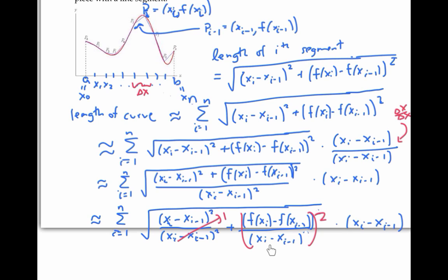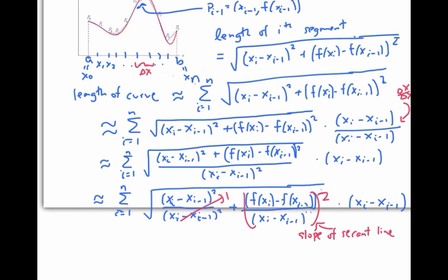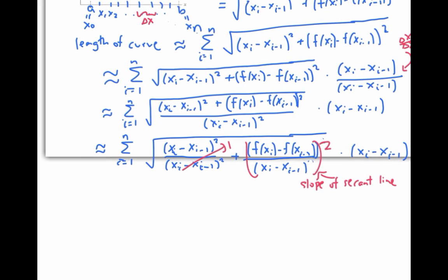It's the expression for the slope of a secant line. And if x i and x i minus 1 are very close to each other, the slope of that secant line is very close to the slope of a tangent line at a point in that interval. In fact, you might recall that the mean value theorem says that the slope of the secant line is actually exactly equal to the slope of a tangent line for some point, I'll call it x i star, in that interval.